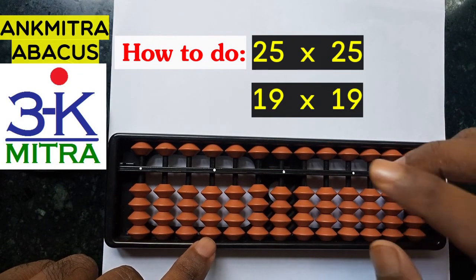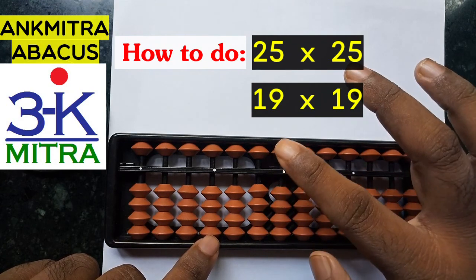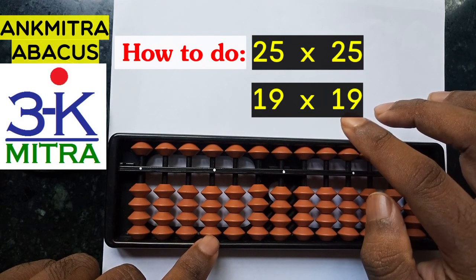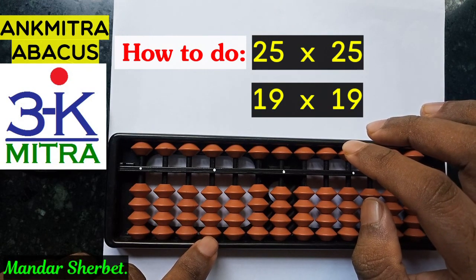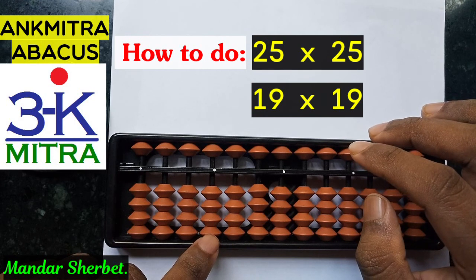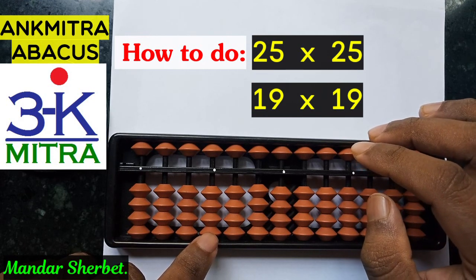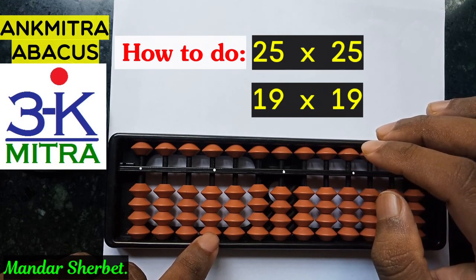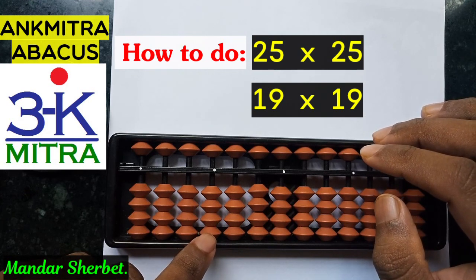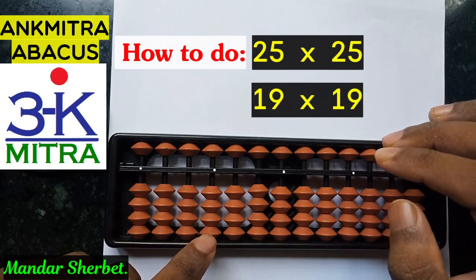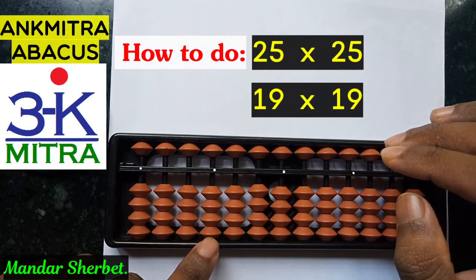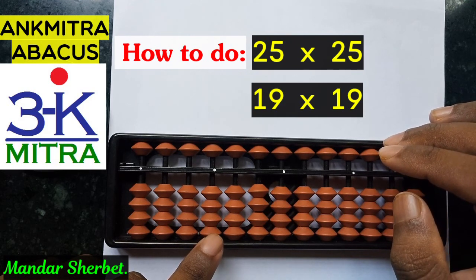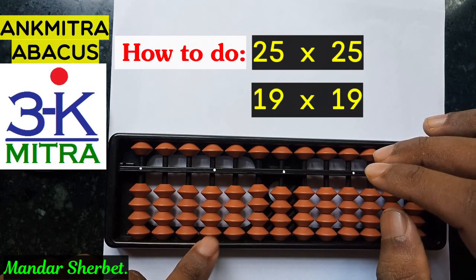We will start with the tens place digit of the first 25 multiplied with the tens place digit of the other 25. So it will be 2 multiplied by 2. The answer we have to take as 04 — any one-digit number multiplied in the table, the answer should always be considered as a two-digit answer. So 2 multiplied by 2 will be taken as 04: 0 on the fourth rod and 4 on the third rod.